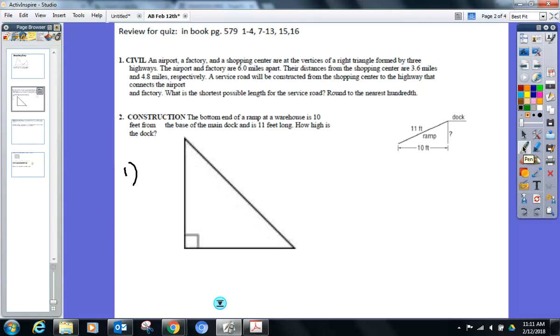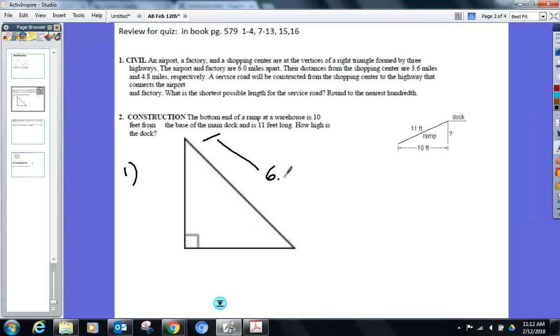Airport and the factory, six miles apart. The distances from the shopping center are 3.6 and 4.8. I should automatically know where the six goes. Where should the six go? Hypotenuse, it's the longest side. So I know my six is going to go here, and that's the distance from the airport to the factory. So airport, factory, that must make the right angle the shopping center.